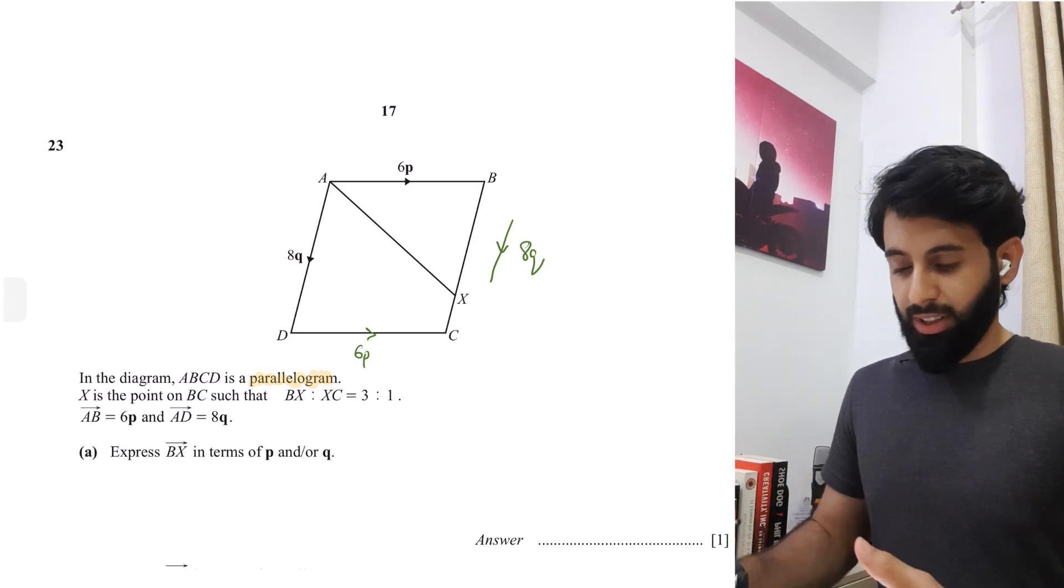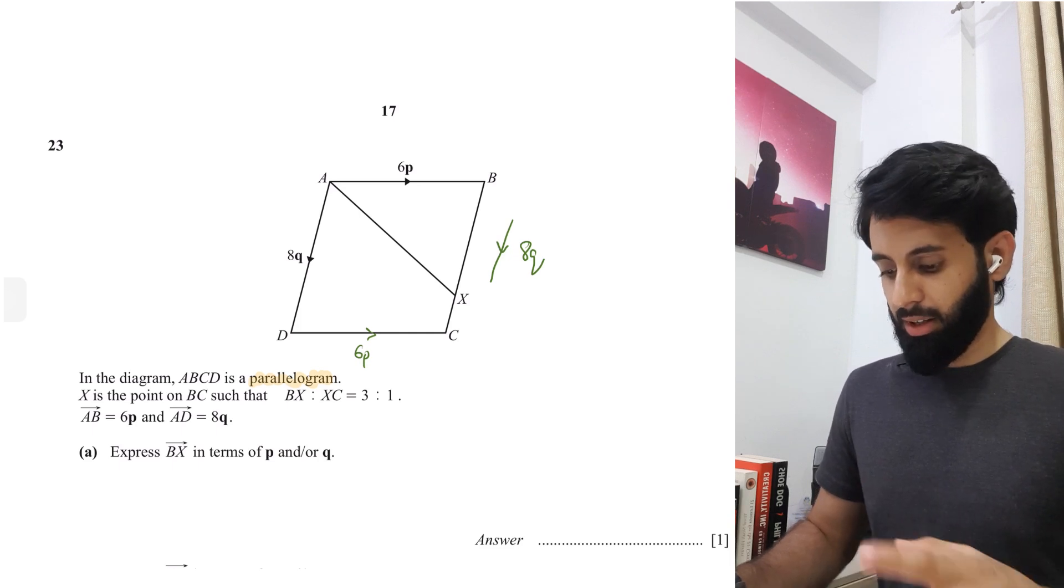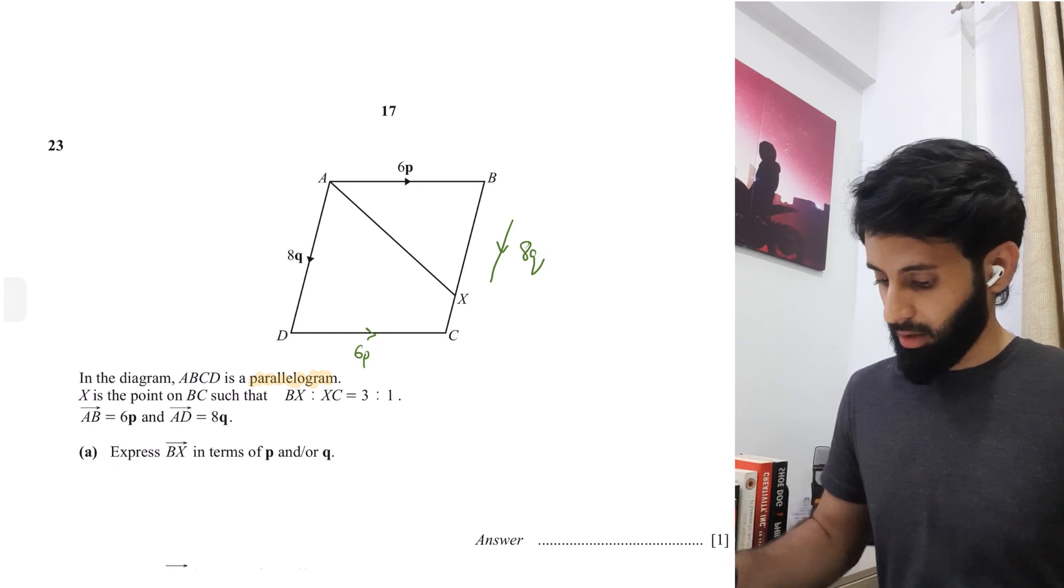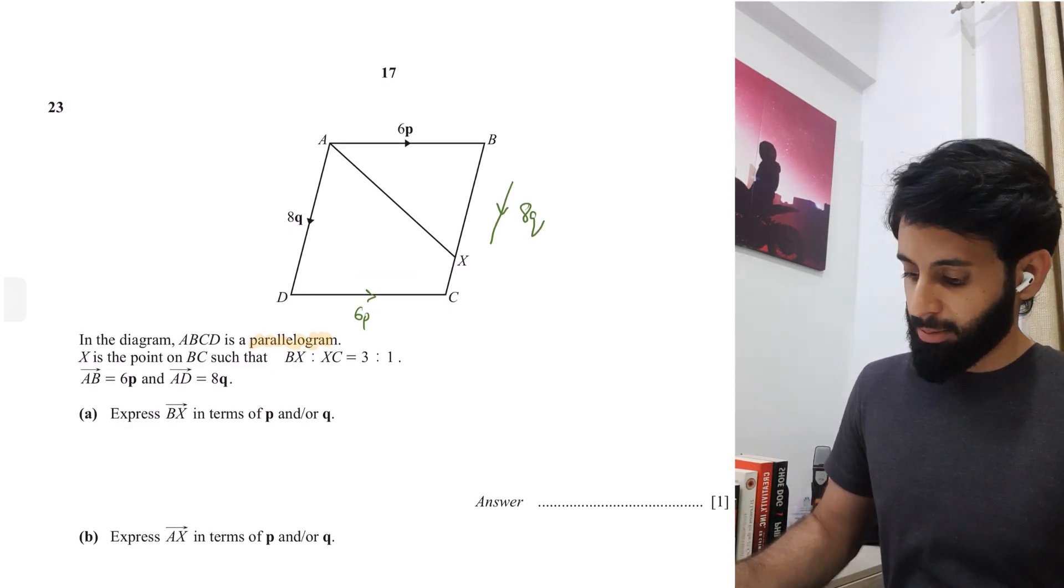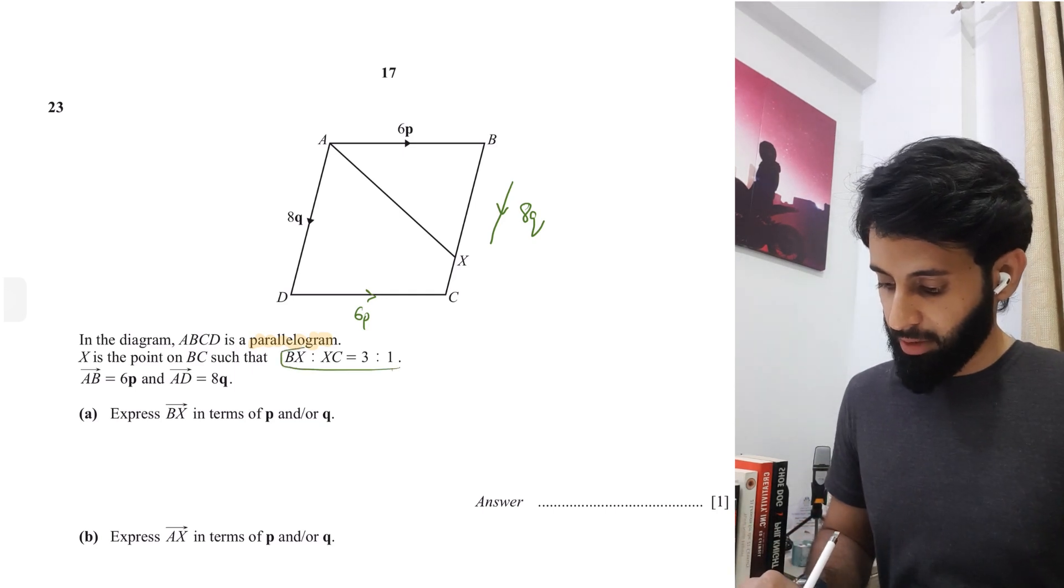Since it's further divided, I've written it on the side so you don't end up assuming that BX is 8Q. It's the entire vector from B to C. The question says express BX in terms of P and or Q. In order to do that, we'll have to go back to the ratio that's given to us.